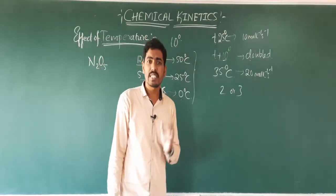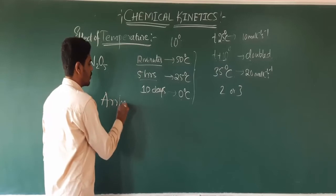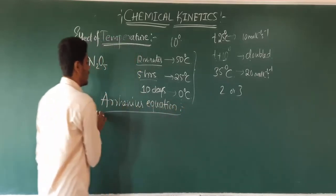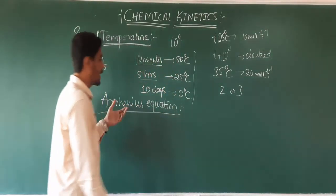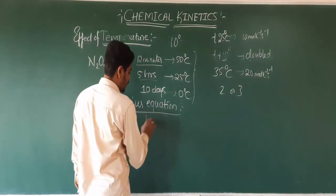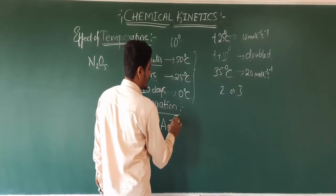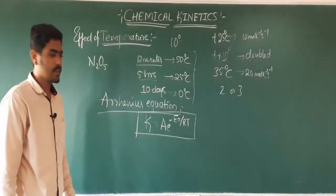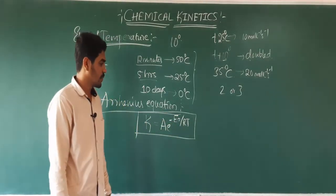This temperature dependence of rate of reaction can be explained with the help of an important equation known as the Arrhenius equation. The Arrhenius equation is: K = A × e^(−Ea/RT). This is a very important equation — remember it.